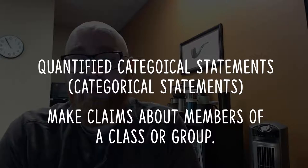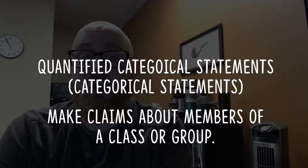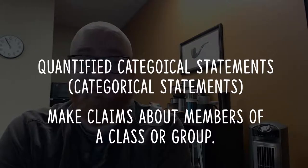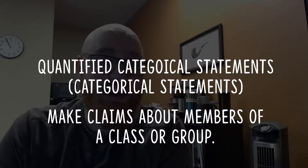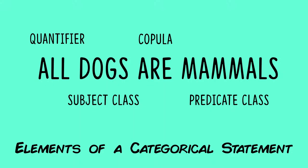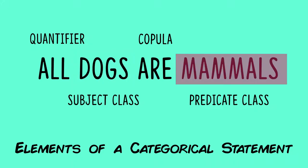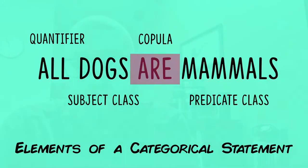These are statements that make claims about a certain quantity — like all, some, or none — of the members of a particular class or group. Each categorical statement has to have four parts: the quantifier, the subject class, the predicate class, and what we call the copula.